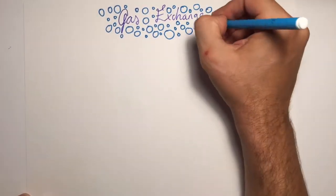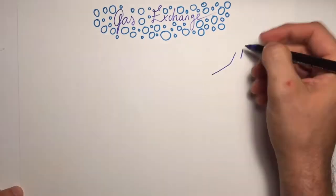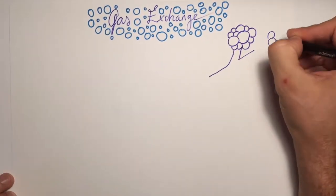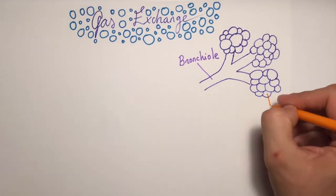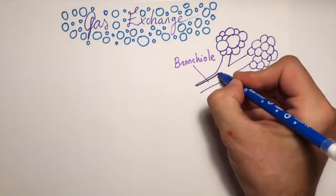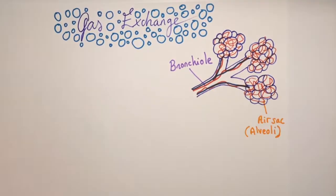The bronchioles lead to the air sacs. These air sacs, or alveoli, are tiny surfaces in the lungs where gas exchange takes place. You can call them alveoli or air sacs.